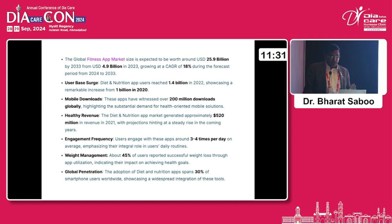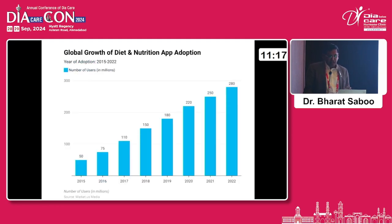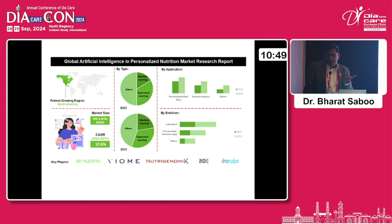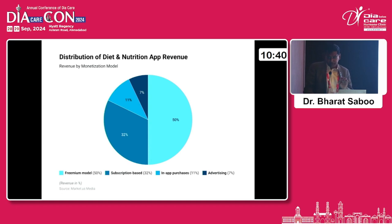By 2025, 50% of diet and nutrition apps will have incorporated artificial intelligence, otherwise they cannot survive or give predictions as per their competitors. The global fitness app market shows a CAGR of 18%, with 200 million downloads. 45% of users reported successful weight loss while using a directed app. There are 18 million users as of 2022. Key players like Nutrino, Biome, and nutrigenomics companies use machine learning and supervised learning, but by 2031 machine learning will take a much bigger share. 50% of apps use a freemium model while 50% use subscription-based models.